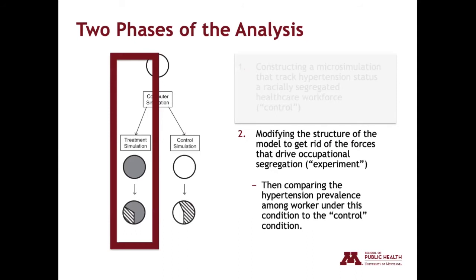In phase two, we modify the structure of our model to eliminate the forces of structural racism and structural sexism that drive occupational segregation for Black and White workers and for men and women. Finally, we compare the prevalence of hypertension under this experimental condition to what we observed in the control condition to determine the potential impact of workforce desegregation.